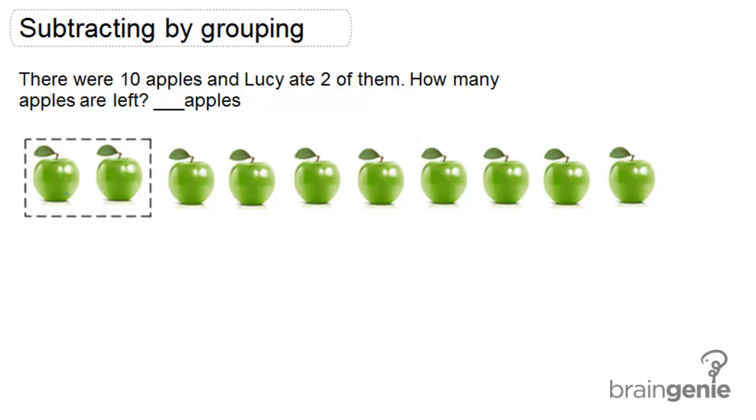In the picture, we can see that to start, there are 10 apples. And these first two apples are grouped because we know in the question it says that Lucy ate two of them.